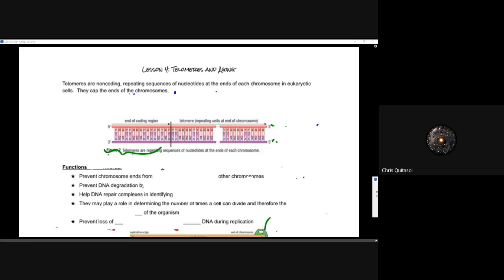Okay, so welcome to lesson four, telomeres and aging. We start to look at some of the application processes of our understandings of how DNA replication works, because there are specific factors that we need to consider when it comes to DNA replication that have bigger idea implications, specifically to the idea of life and aging itself. So telomeres are what's called non-coding repeating sequences of nucleotides at the end of each chromosome in a eukaryotic cell. They cap the ends of those chromosomes.